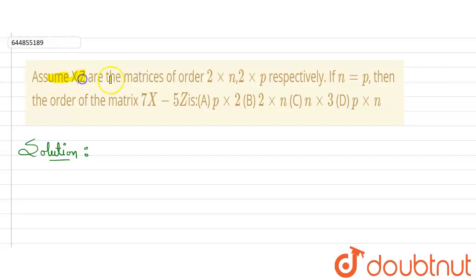It is given that assume X and Z are the matrices of order 2 × n and 2 × p respectively, and n is equal to p. Then the order of matrix 7X minus 5Z will be...